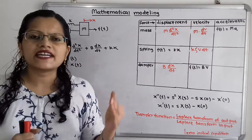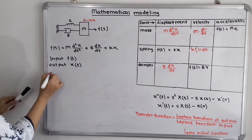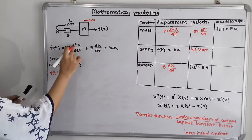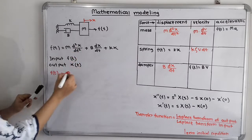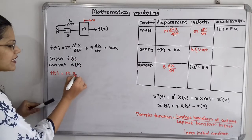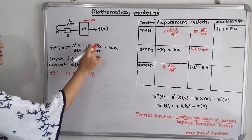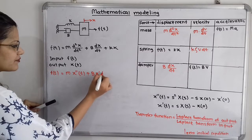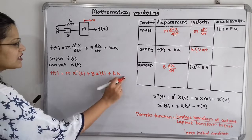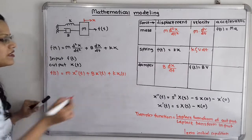Now we will rewrite this equation. f(t) equals m times the second order differential equation d²x/dt², where x also varies with respect to time t. So we write: m·x''(t) plus b·x'(t) plus k·x(t). This is the equation rewritten in terms of t.